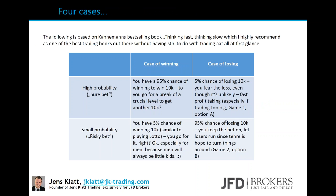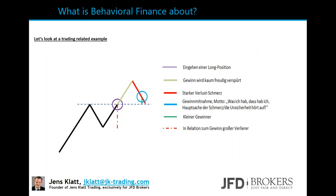Here are four cases adapted from Kahneman's bestselling book 'Thinking Fast, Thinking Slow': the high-probability sure bet and the small-probability risky bet, each in a case of winning and a case of losing. In the winning case: a 95% chance of winning 10,000 euros — do you go for a break of a crucial level to get another 10,000? This is exactly the same as game one.